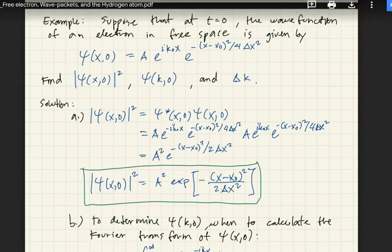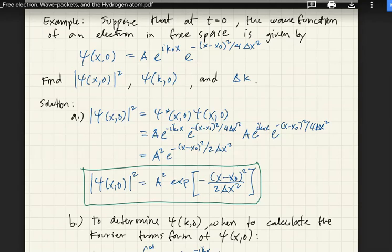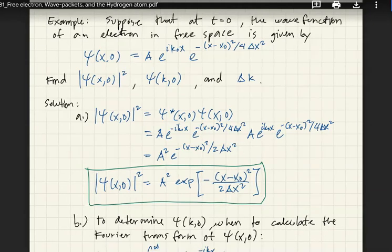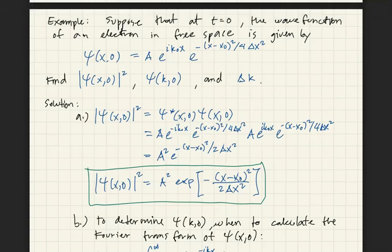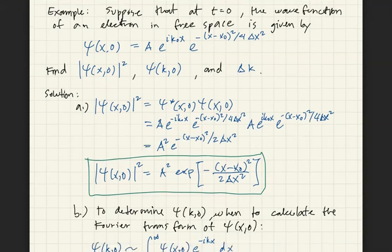Example: Suppose at t equals zero the wave function of an electron in free space is psi(x, 0) equals A e raised to i k naught x times e raised to negative (x minus x naught) squared over 4 delta x squared. Find the probability density of psi(x, 0), find psi(k, 0), and find delta p. Solution: The probability density is psi star times psi, giving A squared e raised to negative (x minus x naught) squared over 2 delta x squared.